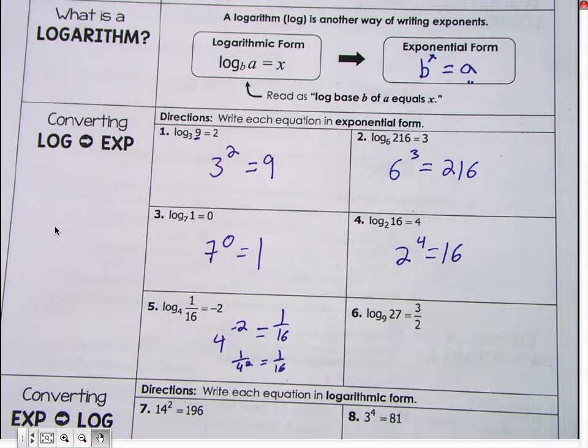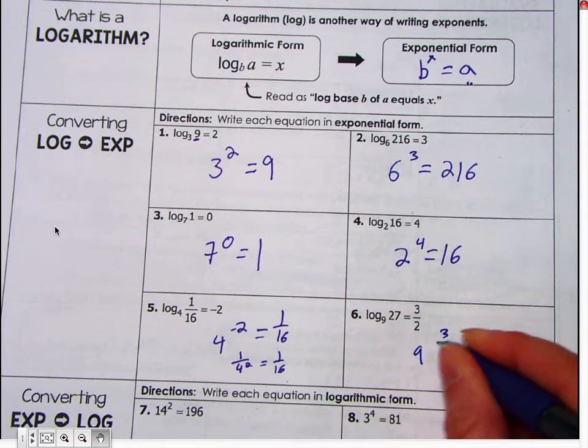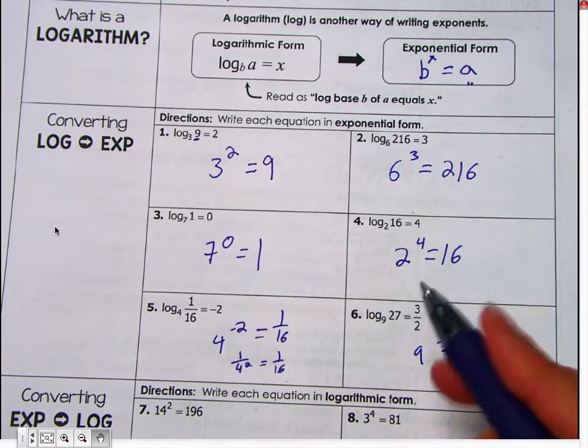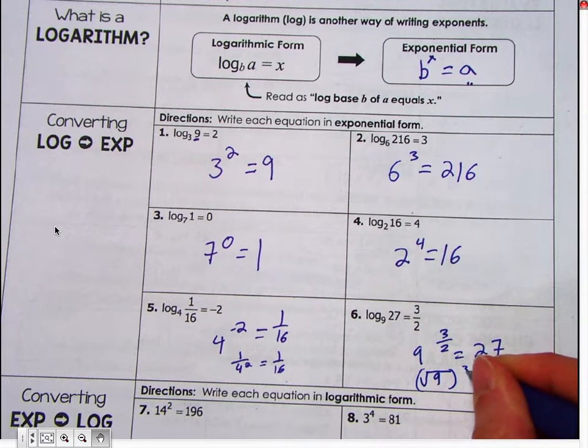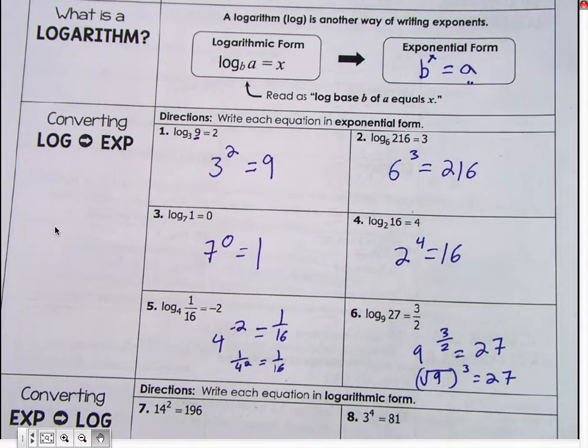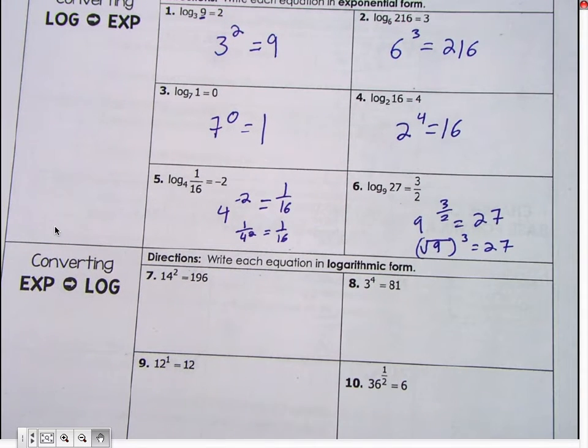All right. Number six. Go ahead, Michelle. Nine to the three halves equals twenty-seven. Yep. And remember that's like the square root of nine cubed equals twenty-seven. Okay. Now we're going to go the other way. I won't make them disappear.